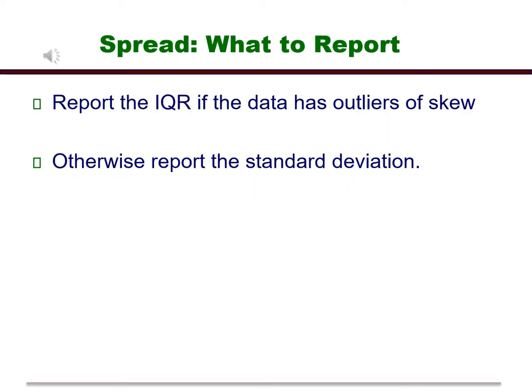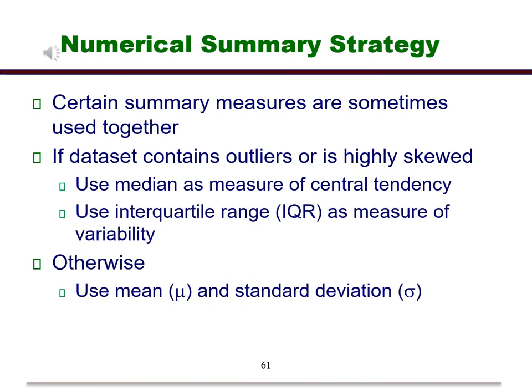So what we're going to do here is report the IQR if the data shows skew or has outliers present. Otherwise, we will report the standard deviation. Now let's put it all together. So when completing a preliminary analysis, you want to report a measure of location and a measure of spread. If the data contains outliers or shows skew, we report the median and IQR. Otherwise, we report the mean and standard deviation.